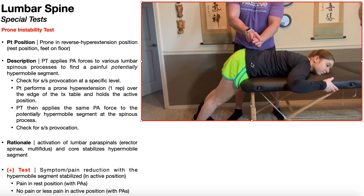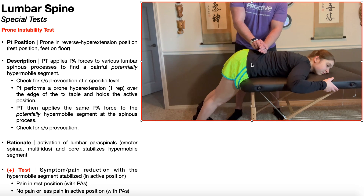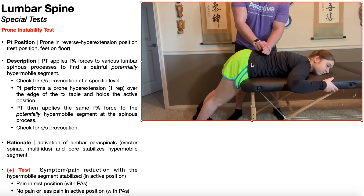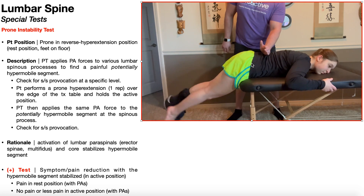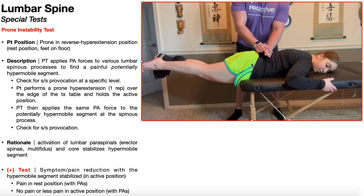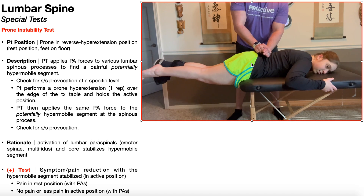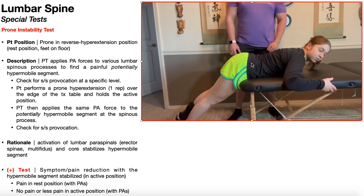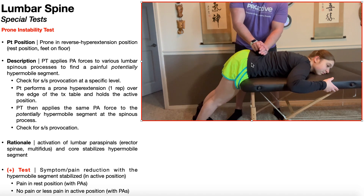To summarize the test: begin in the resting position and find the painful and potentially hypermobile segment. Keep the hand locked on that segment, then have the patient perform the reverse hyperextension with knees straight or slightly bent. Apply the same PAs — there should be less pain in the active position than in the resting position, which constitutes a positive test. That pain reduction is due to the stabilization effect of the core and lumbar paraspinal muscles on the hypermobile segment.